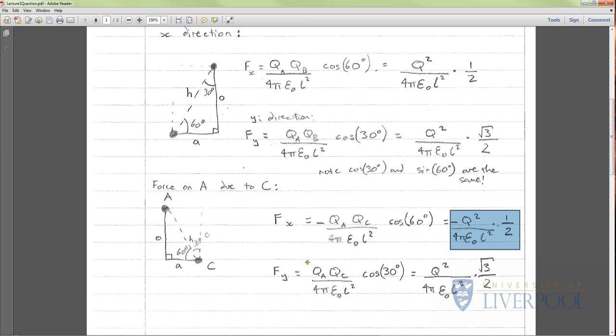Next, y direction. Is this getting repetitive? You just need to keep breaking the problem down, solving a bit of it, and then we bring it all together at the end. This time Fy is also acting in the positive y direction so we don't need to worry about any negative signs. It's cos 30 because we're interested in the opposite rather than the adjacent. Cos 30 is root 3 over 2, so we get this answer for the force on A due to C in the y direction.